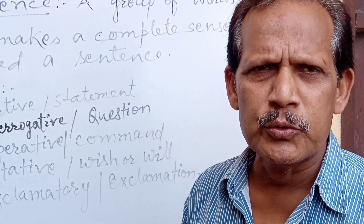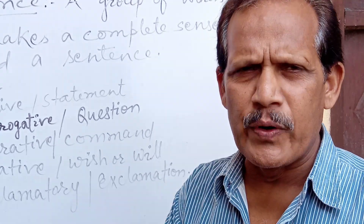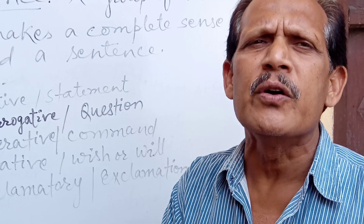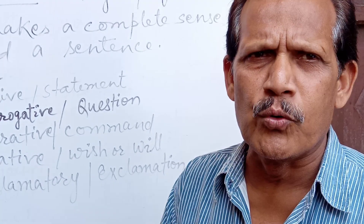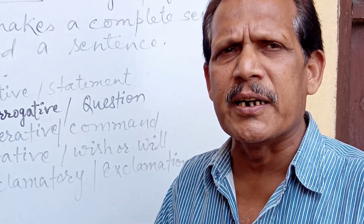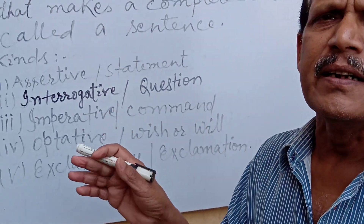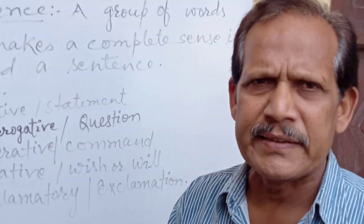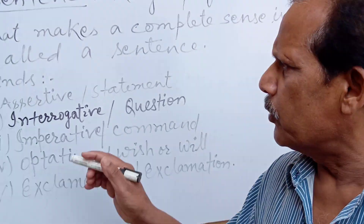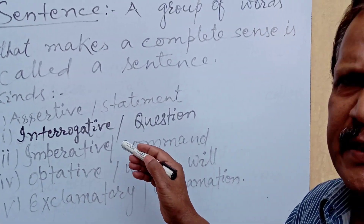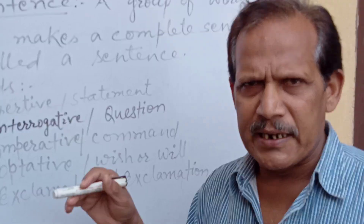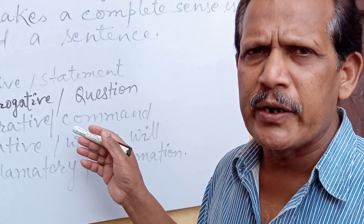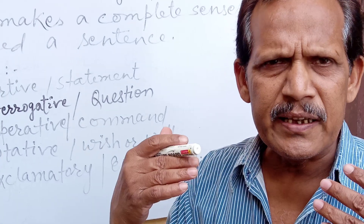A double interrogative sentence begins with a WH-word — such as when, what, why, who, whose, whom, which, how, etc. For example: 'When will you return?', 'What do you do?' So there are two types of interrogative: simple interrogative, which begins with a verb, and double interrogative, which begins with a WH-word.